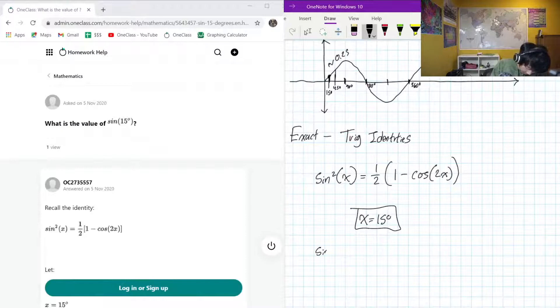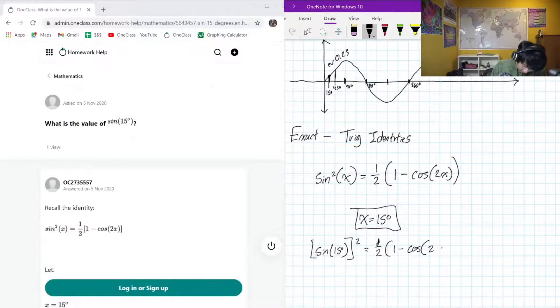Okay, so if we have x is equal to 15, then we could rewrite this as sine of 15 degrees squared, because that's really what the sine squared means, is going to be equal to 1 half of 1 minus cos 2 times 15 degrees, which, of course, we know is going to be 30 degrees.